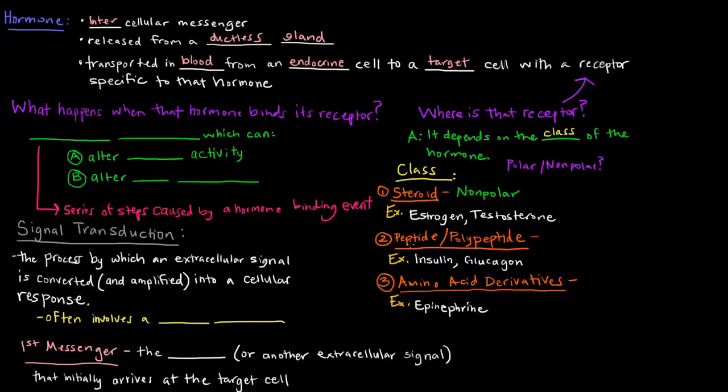The second class, peptide or polypeptide hormones, are basically protein hormones or sequences of amino acids. Generally speaking, these are polar hormones. Examples we're going to talk about are insulin and glucagon. The third class is amino acid derivatives, which are usually also polar—it depends on the amino acids they derive from. Epinephrine, also known as adrenaline, is an example of that.